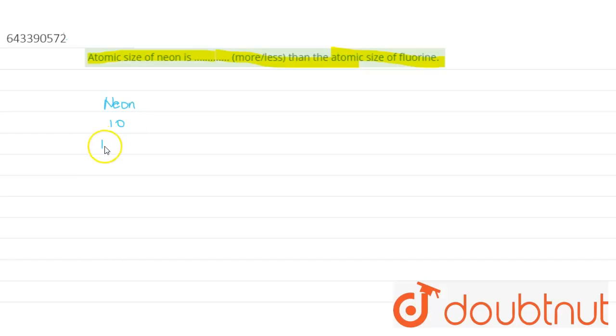So the electronic configuration will be 1s², 2s², 2p⁶, and fluorine has 9 electrons.